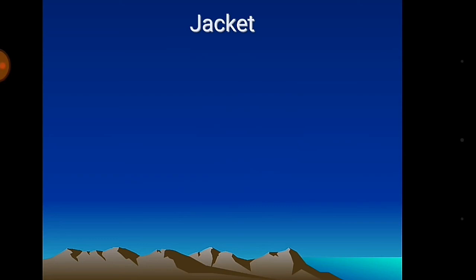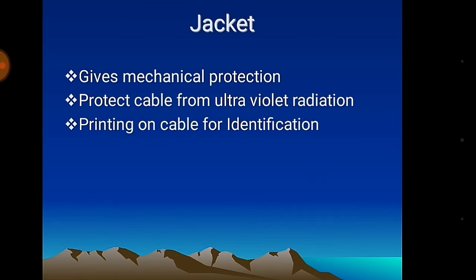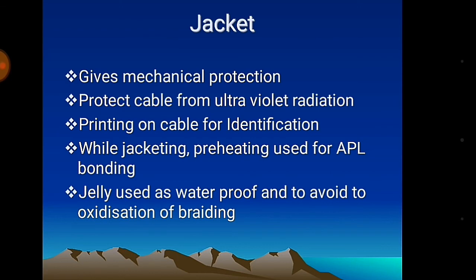The final stage is jacketing. It gives mechanical protection and protects the cable from ultraviolet radiation. Printing on the cable is done for identification. During jacketing, free heating is used for APL bonding. Jelly is used as waterproofing to avoid oxidation of braiding.